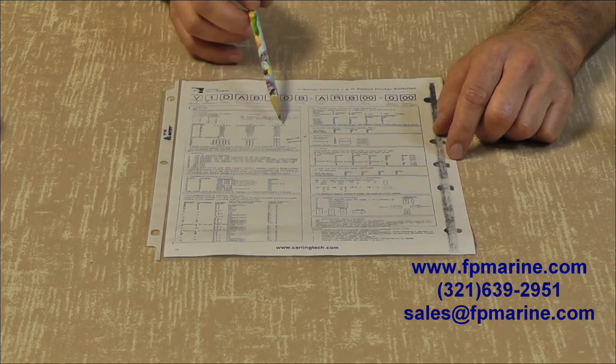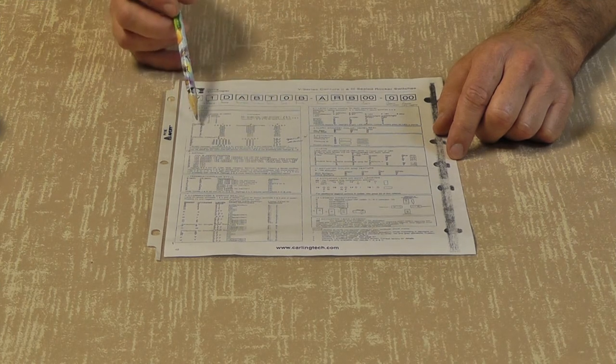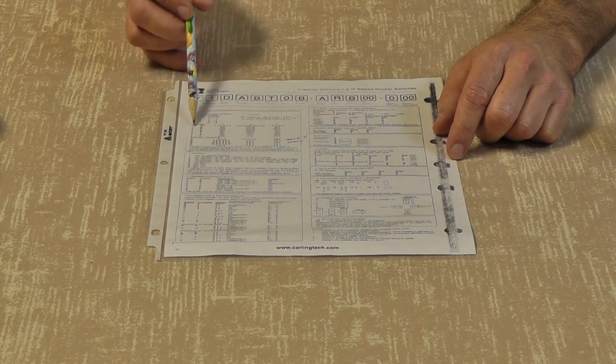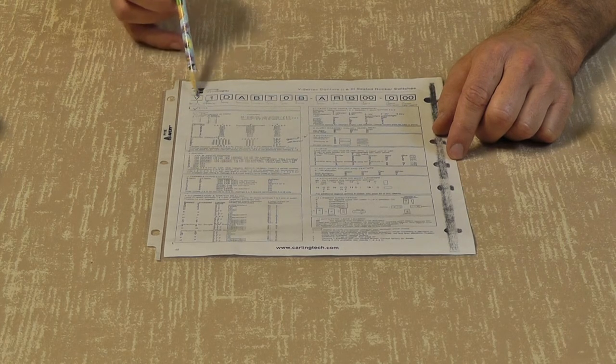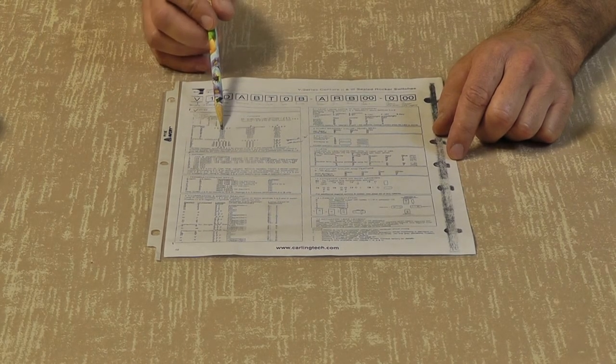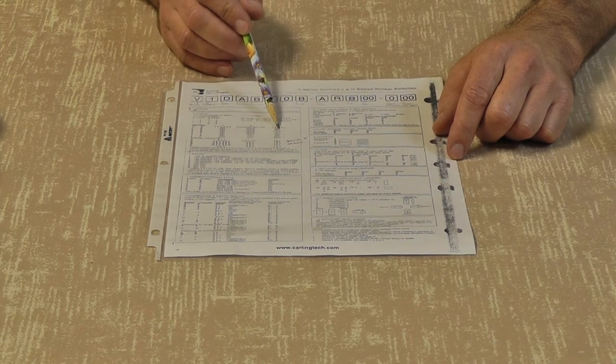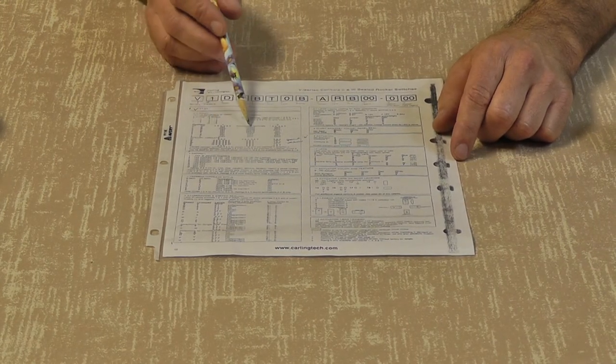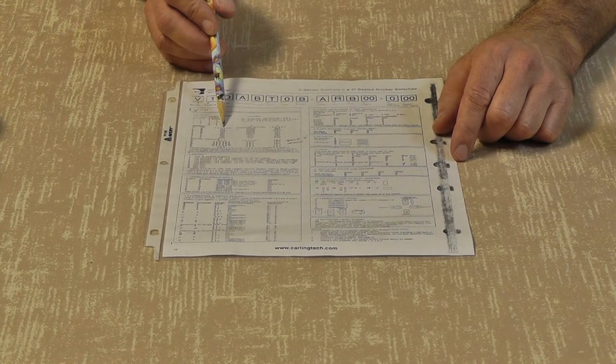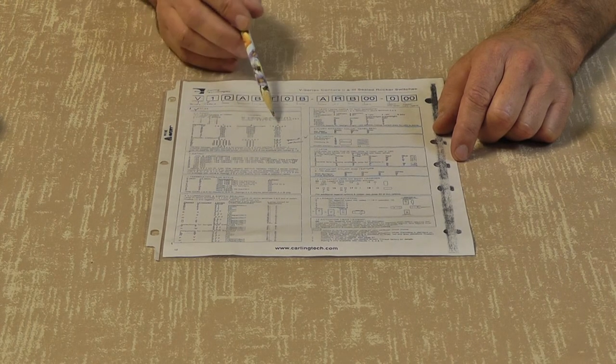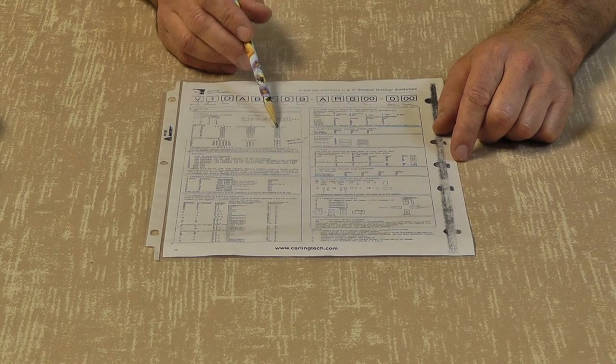To explain how this is worded here, each switch as you read across its row, like let's say it's a single pole switch, so it's going to be a V1. That's going to be an on, none, off. And as shown by the actuator positions, it doesn't have an actuator position number two. So when it's in actuator position number one, it's on. When it's in actuator position number three, it's off.